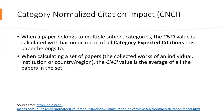Category Normalized Citation Impact can also be applied to any level of aggregation, such as journal, author, or institution. When calculating a set of papers, the CNCI value is the average of all the papers in that set.